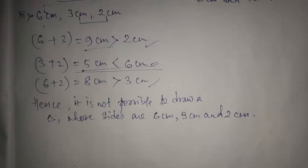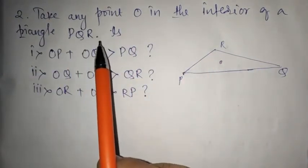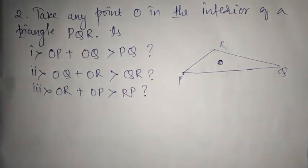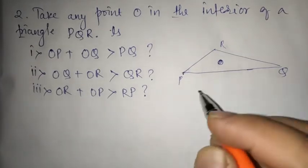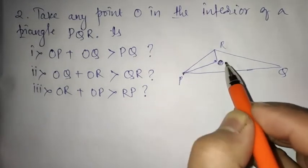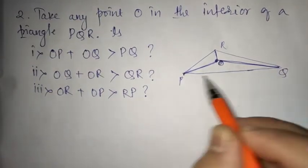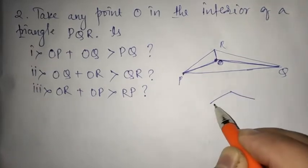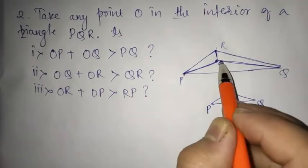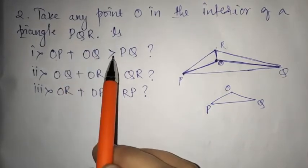Now let us proceed to question number 2. The question says: take any point O in the interior of a triangle PQR. I have taken O at the center of triangle PQR. Now let us join O to all three vertices. You can see that three smaller triangles are formed. You have to justify that OP plus OQ is greater than PQ.